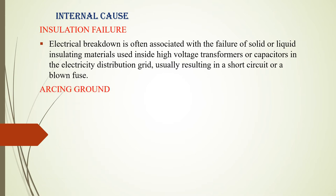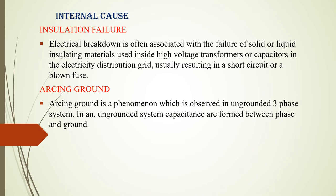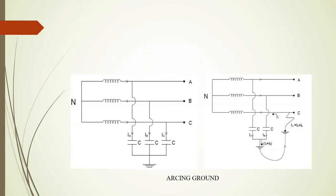The next important concept is arcing ground. Arcing ground is an electrical phenomenon that usually occurs in an ungrounded three-phase system — that is, a system where the neutral point is not connected to earth. When the neutral point is not connected to earth, this phenomenon takes place and is one of the major causes of transients. You can see in the diagram on the left-hand side a three-phase balanced system with a neutral end that is not connected to earth. There will be capacitance existing between each phase with respect to ground.